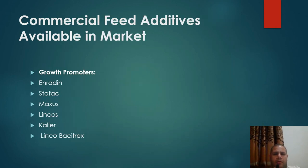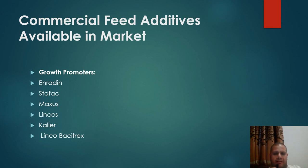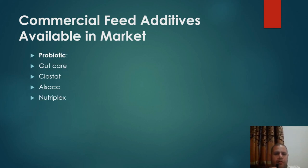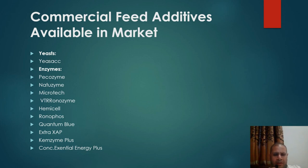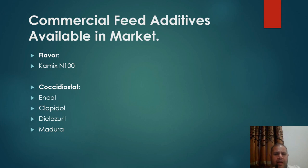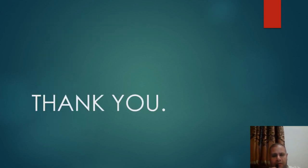We will now discuss the product or marketing names of different feed additives available in the market. Toxin binders: Mycosorb, Refit, Stac Maxis, Linkos, Calia, Linkobactrix. Probiotics: Gutcare, Clostat, LSAC, Nutriplex. Yeast: Yeasac. Enzymes: Picozyme, Netzyme, Microtech, VTR, Ronozyme, Hemicell, Ronophos, Quantum Blue, Zap, Chemizyme Plus. Flavoring: Chemics. Anticoccidials: Clopidol, Diclazuril, and Medera. Thank you for listening. Assalamualaikum.